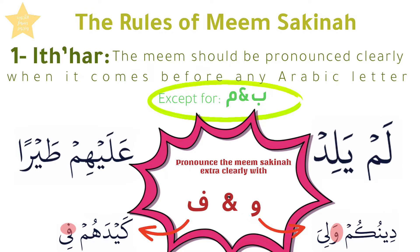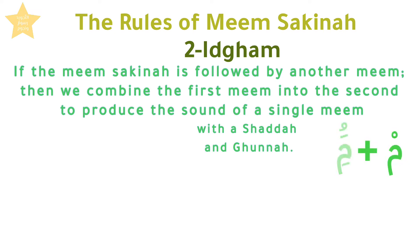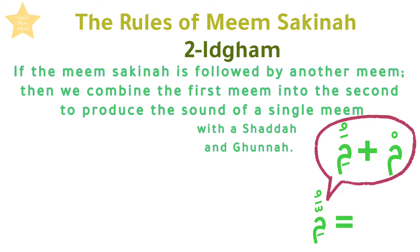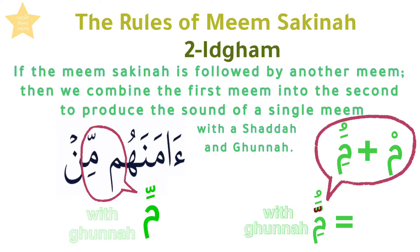The second rule of the Meem Sakinah is Idgham. If the Meem Sakinah is followed by another Meem, then we combine the first Meem into the second to pronounce the sound of a single Meem with a Shadda and Ghunna. Notice that we pronounced a single Meem with a Shadda and Ghunna.